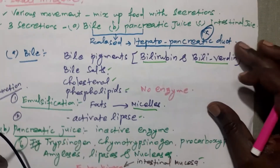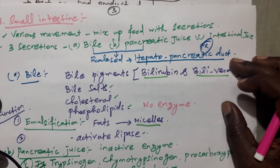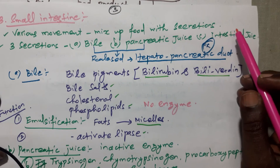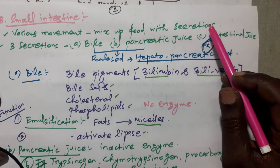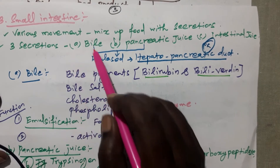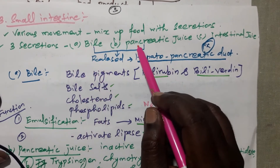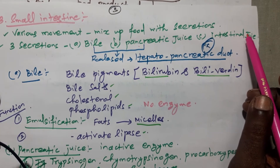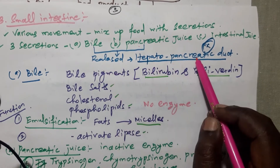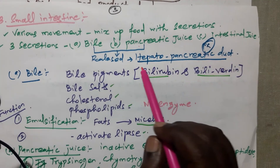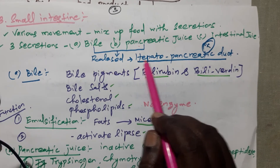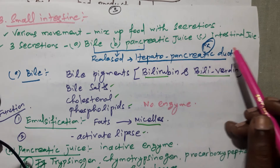The third stage of digestion occurs in the small intestine. Here, various movements mix the food material with secretions. Three secretions open into the small intestine: one is bile, secreted from the liver; pancreatic juice; and intestinal juice. Both bile and pancreatic juice are released through the hepatopancreatic duct into the duodenum of the small intestine.